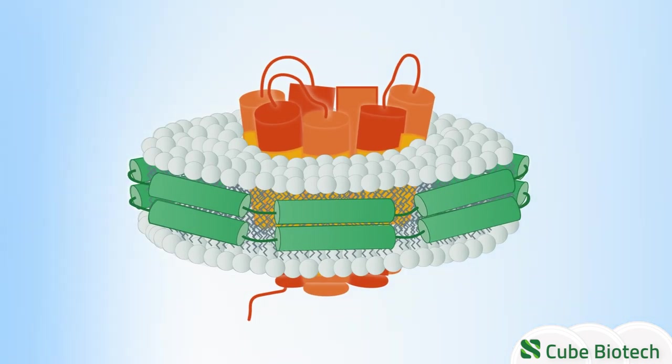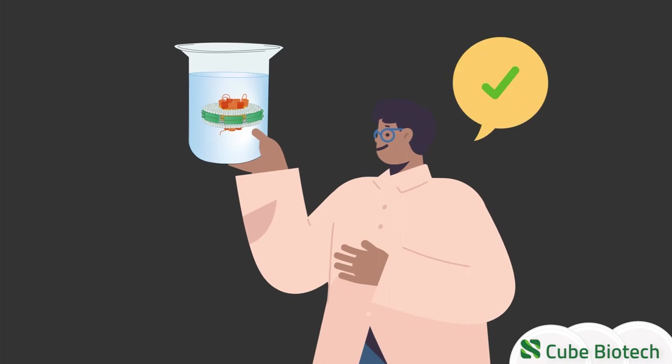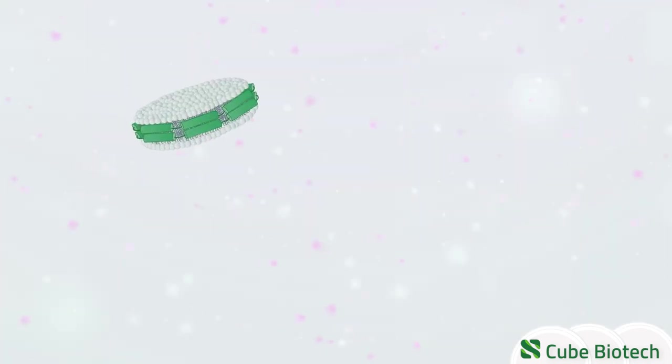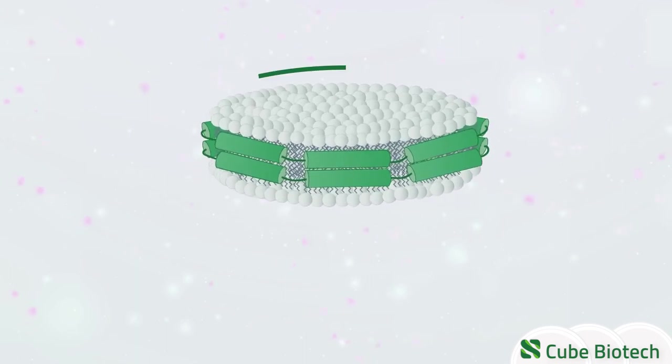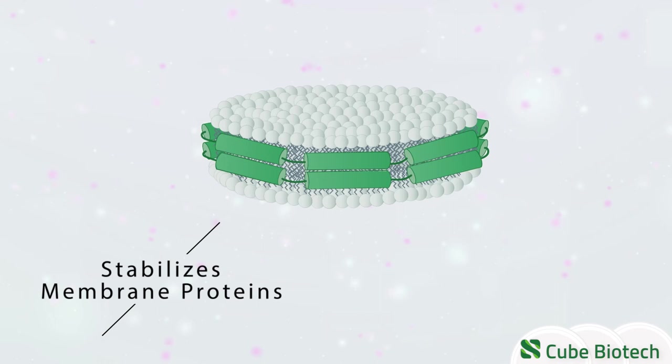With the help of nanodiscs, membrane proteins can thus be studied in a native-like environment. But what is a nanodisc? The term nanodisc describes a disc-shaped structure that is able to stabilize membrane proteins by using a belt.